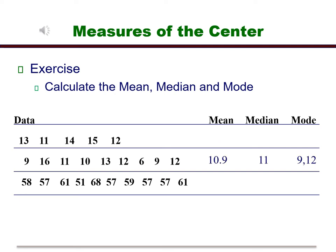The answers for line two: the mean is 10.9, the median is 11, and the mode is actually two values. One is 9, and one is 12.